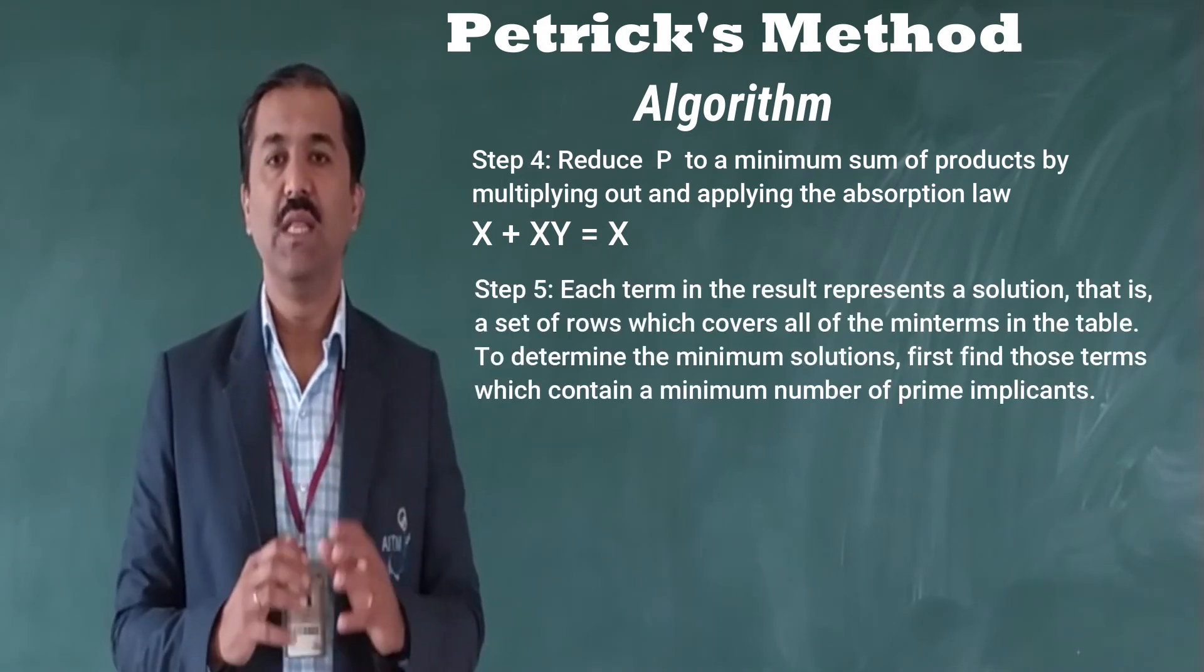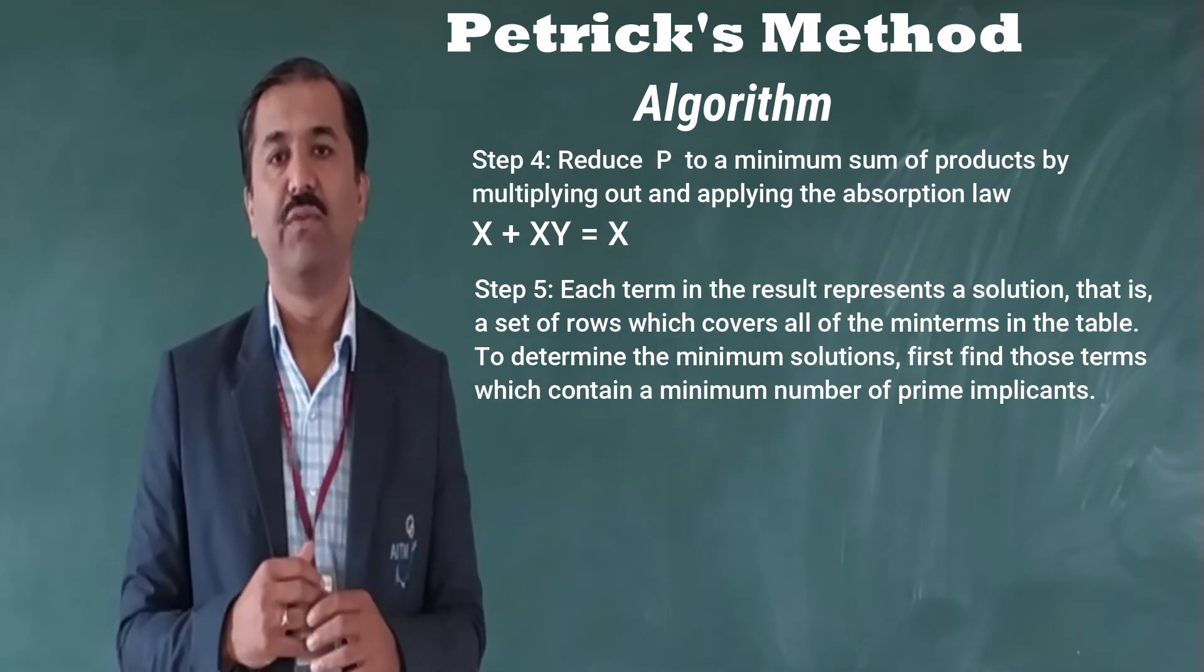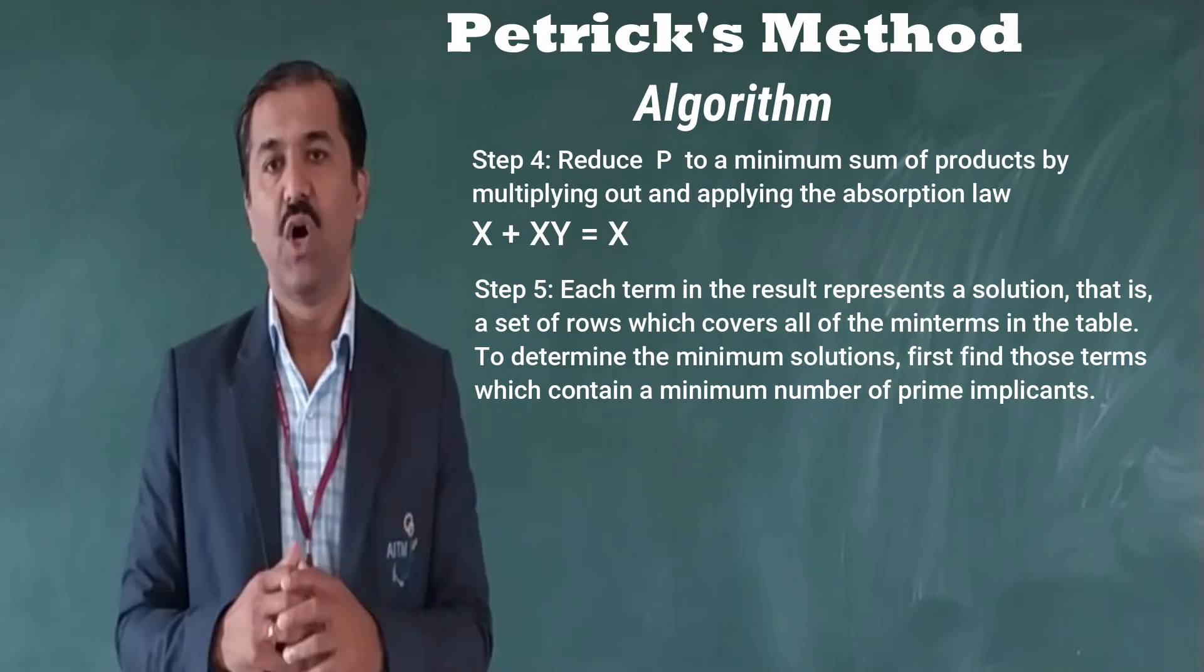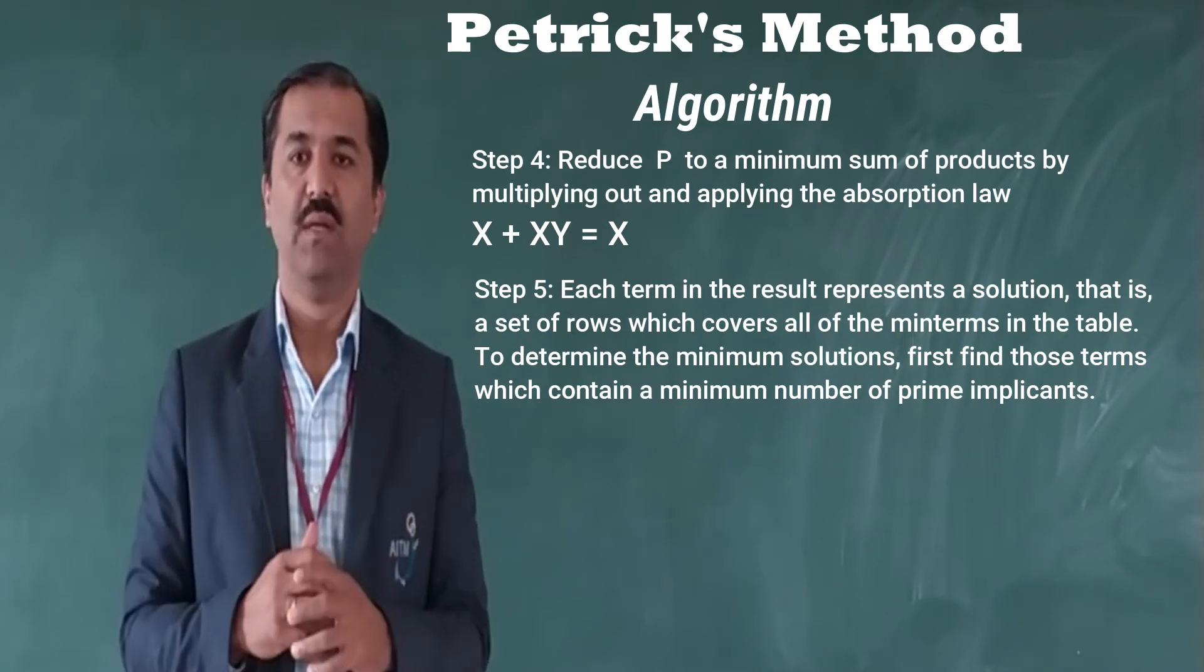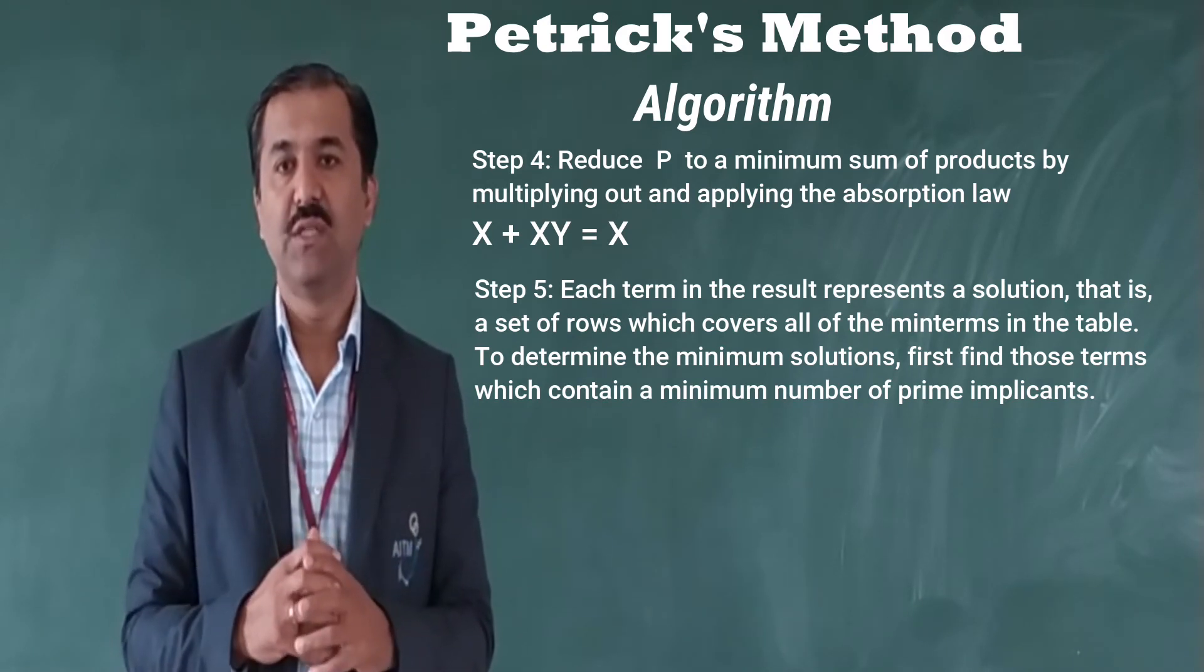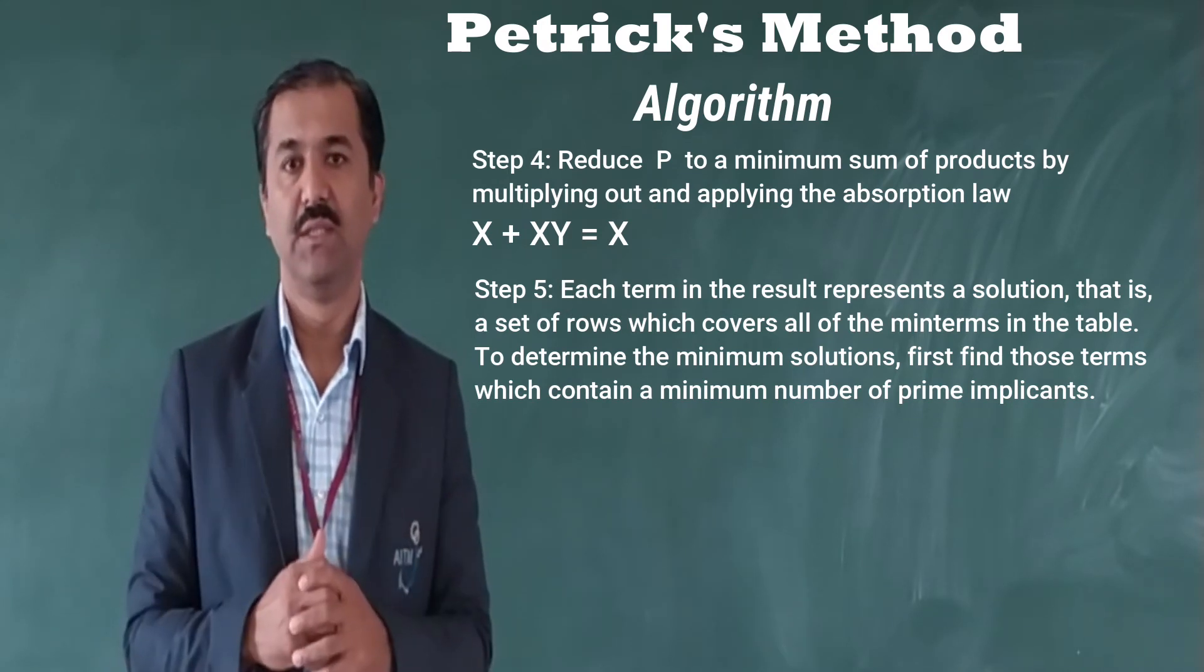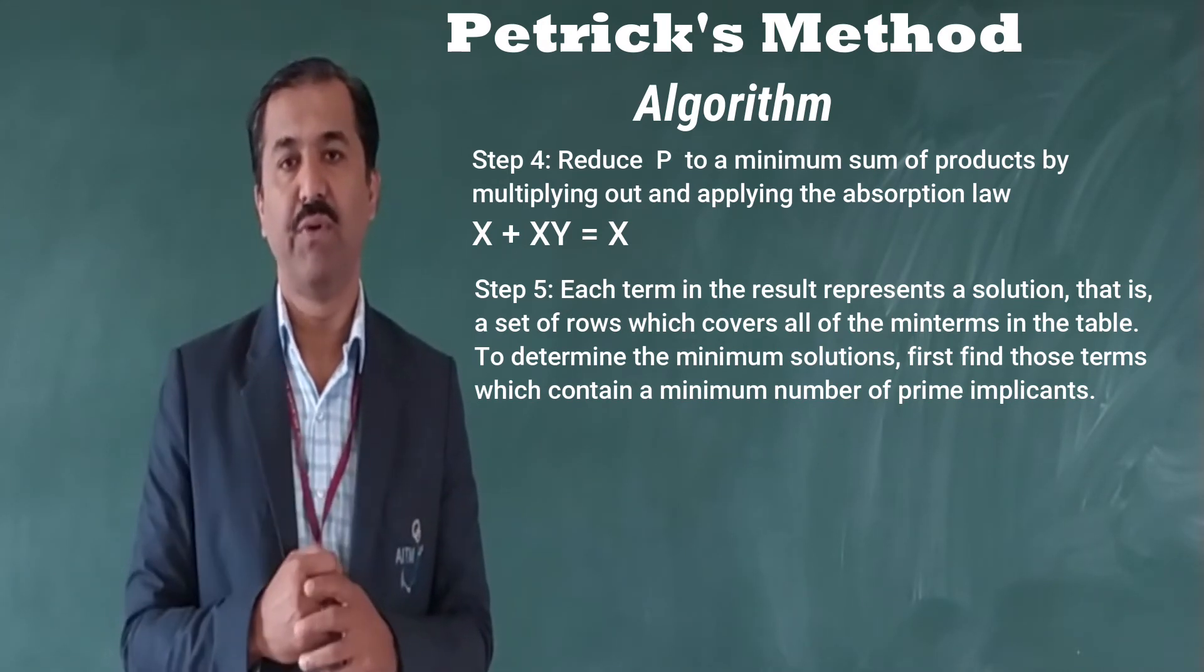Each term in the result represents a solution, that is, a set of rows which covers all the main terms in the table. To determine the minimum solution, first find those terms which contain a minimum number of prime implicants. This is step number 5.